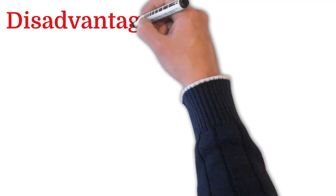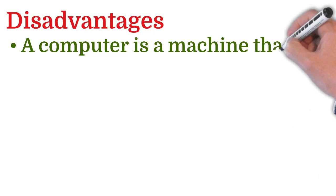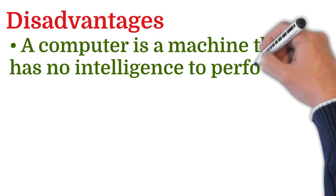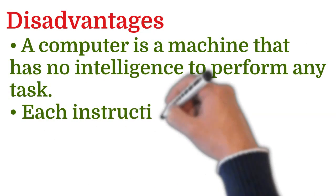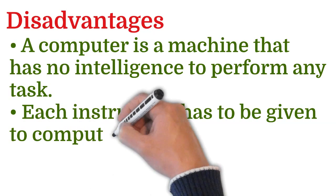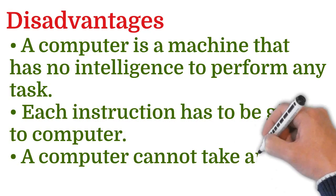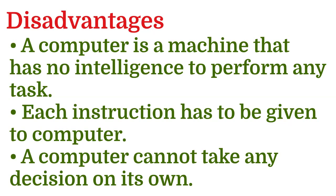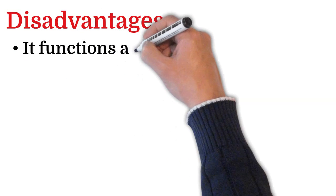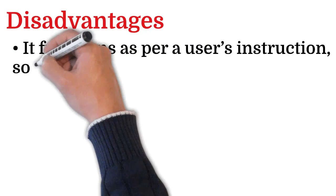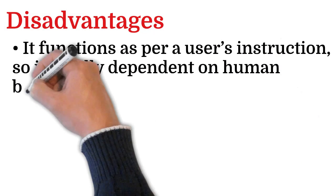Next, let's discuss the disadvantages of computers. A computer is a machine that has no intelligence to perform any task. Each instruction has to be given to the computer; a computer cannot take any decision on its own. It functions as per the user's instructions, so it is fully dependent on human beings.